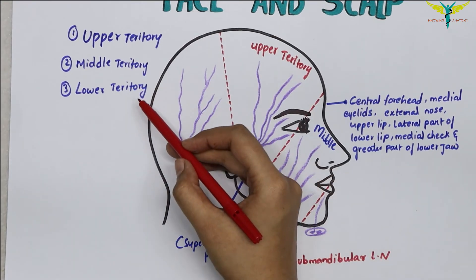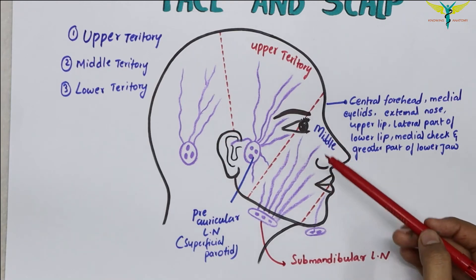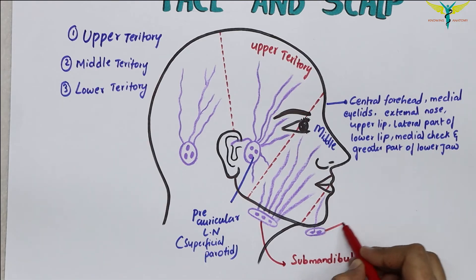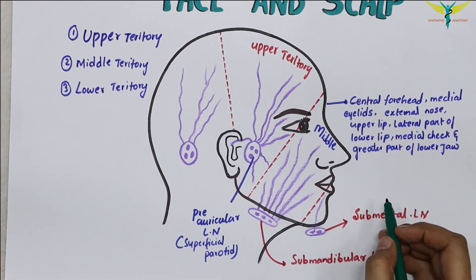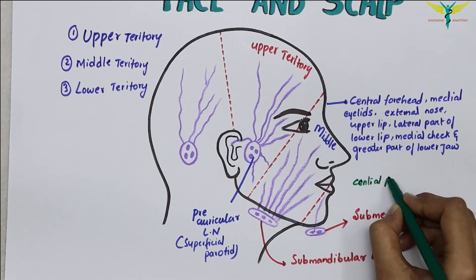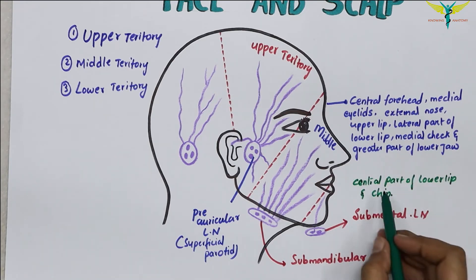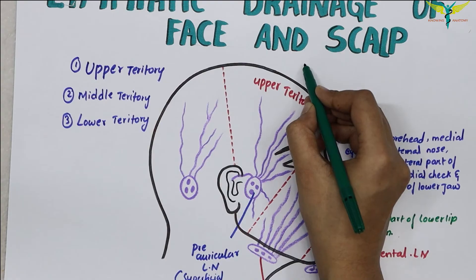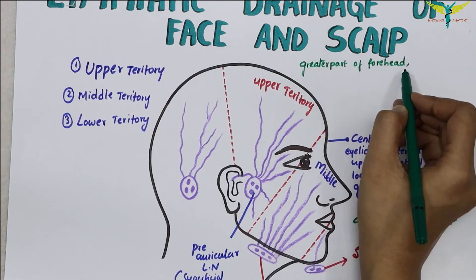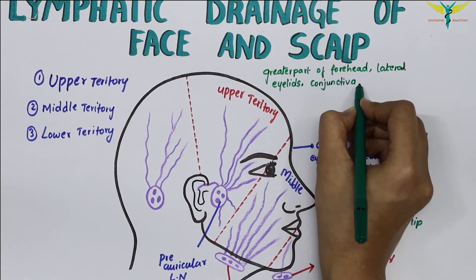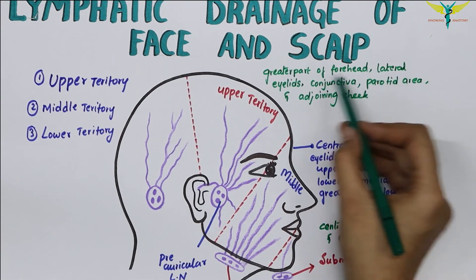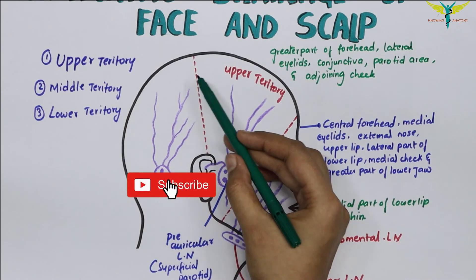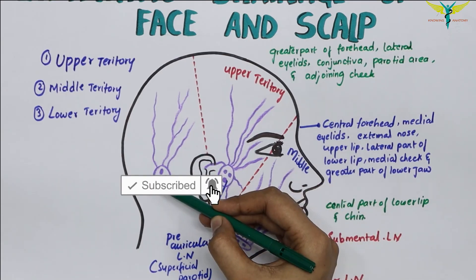The lower territory comprises the central part of the lower lip and the chin. The areas of the upper territory are the greater part of the forehead, the lateral part of the eyelids, the conjunctiva, the parotid area, and the adjoining cheek. The lymph from the area behind the ear is drained by the occipital lymph nodes.